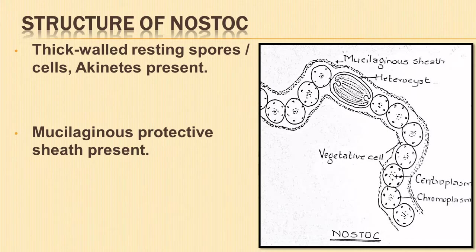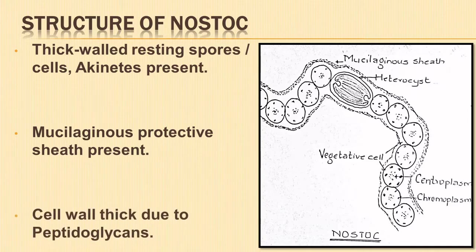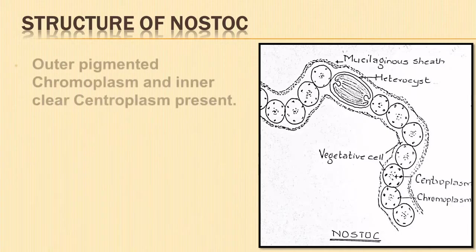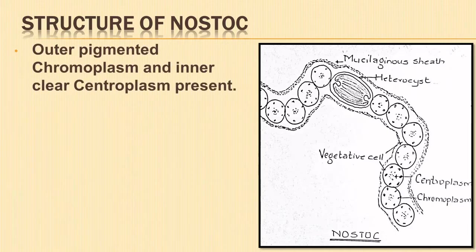The mucilaginous sheath acts as a protective layer. It is made up of polysaccharides and proteins, and helps in absorbing and retaining water. The cell wall of Nostoc is thick due to the presence of peptidoglycan. The cytoplasm can be differentiated into an outer pigmented chromoplasm, due to peripherally arranged chromoplasts, and an inner colorless clear cytoplasm known as centroplasm.